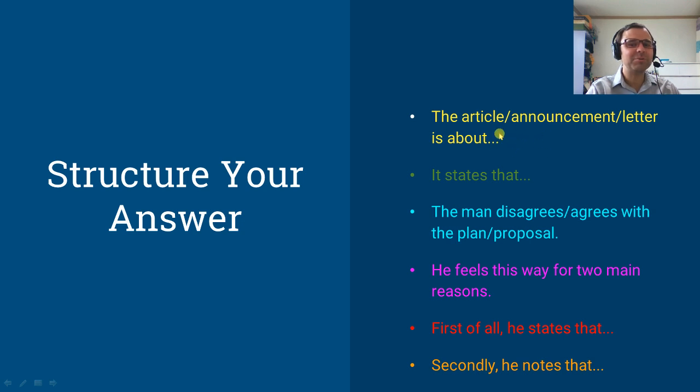And you can see what comes next. Here's where the topic goes. The article is about the cafeteria. I'm actually going to give you the full answer in a moment, don't worry. It states that. And here's where you put your notes about the reading. The man agrees with the proposal. The man disagrees with the proposal. He feels this way for two main reasons. First of all, he states that. And here's where you put your notes about the first reason. Secondly, he notes that. Here's where you put your notes about the second reason. Again, I really want to stress, this is going to work every time. If you've got a textbook where it doesn't work, you've got a crappy textbook. Get something better. Get a better practice question.